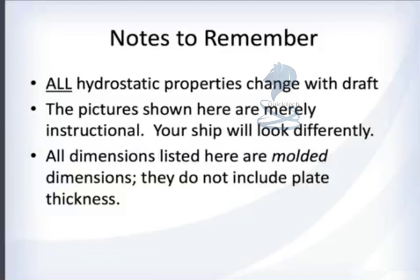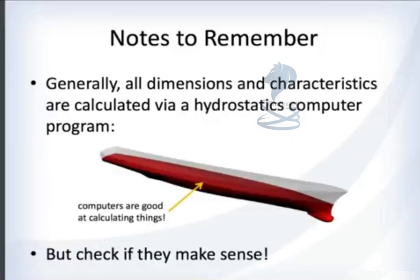Some important notes: all the values discussed here will change with draft, so calculations are done for multiple drafts. The dimensions shown are molded dimensions — from the very outside of the ship to the other outside, not including plate thickness. Generally, all these dimensions and characteristics will be calculated by computer, but you must always go back and check that the results make sense — for example, verifying that the block coefficient, prismatic coefficient, and midship section coefficient all agree with each other.